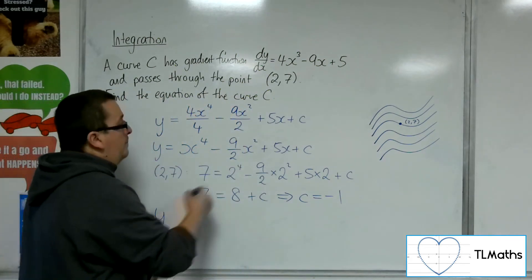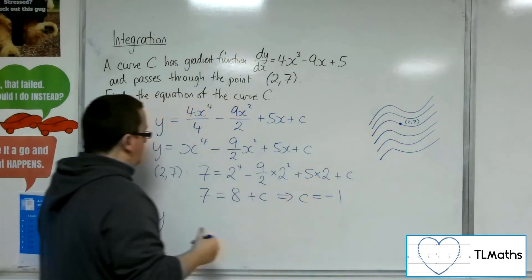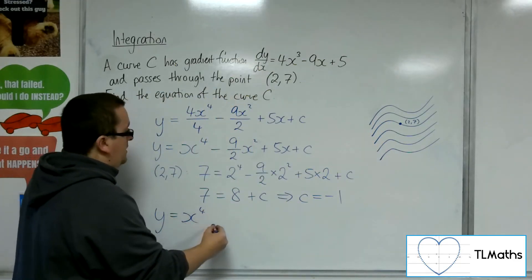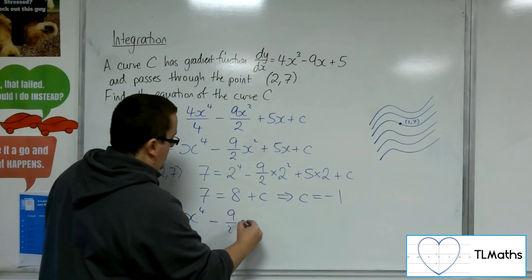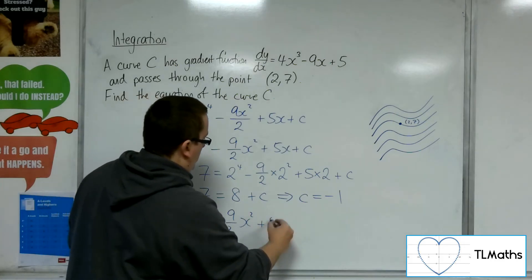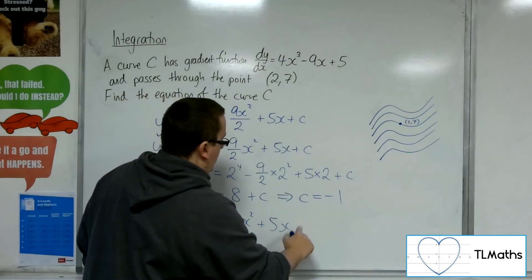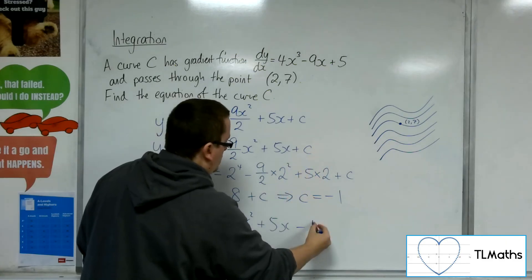So that particular curve there has the equation y equals x⁴ minus 9/2 x² plus 5x, and it's plus C, which is just take away 1.